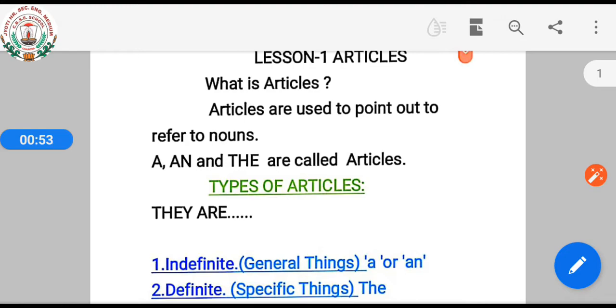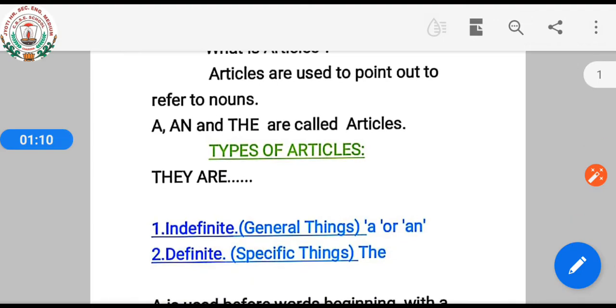Articles are used to point out or refer to nouns. A, an, and the are called articles. Types of articles: indefinite articles where we use 'a' or 'an', and definite articles where we use 'the'.